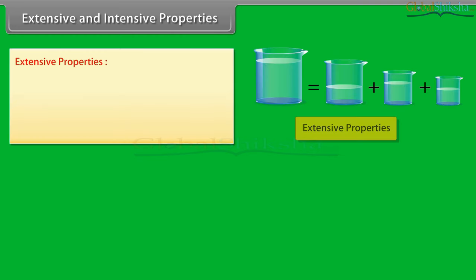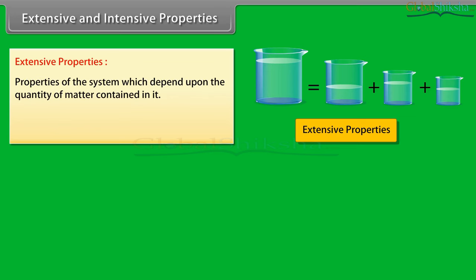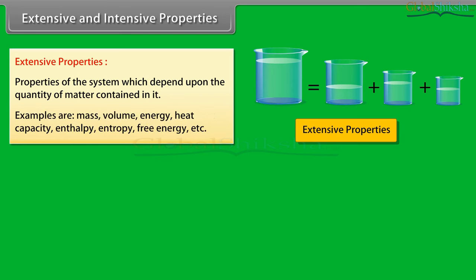Extensive properties: properties of the system which depend upon the quantity of matter contained in it. Examples are mass, volume, energy, heat capacity, enthalpy, entropy, free energy, etc.